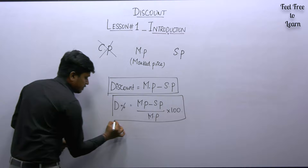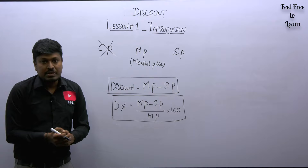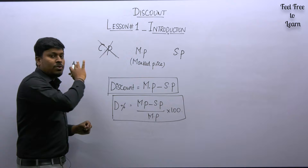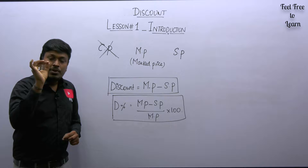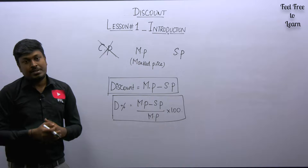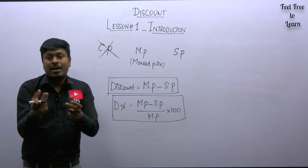From this formula we can derive two or three more formulas, but these two are the most important ones in discount. Remember: while reading a question, if you find the word 'discount,' never care about the cost price. You should take only the marked price and the selling price. Many students get confused about the difference between cost price and marked price — without knowing this difference you can't solve the question.